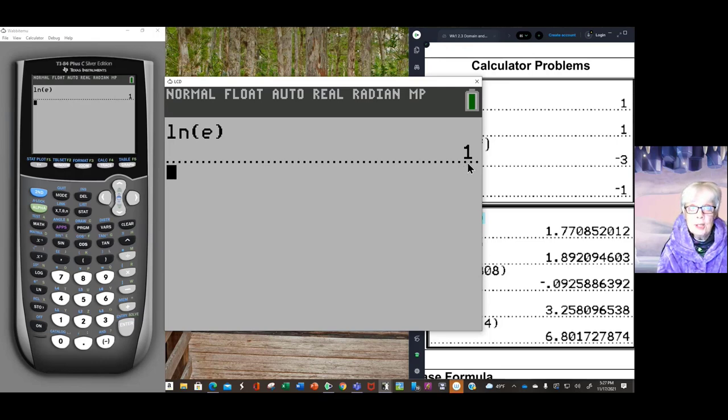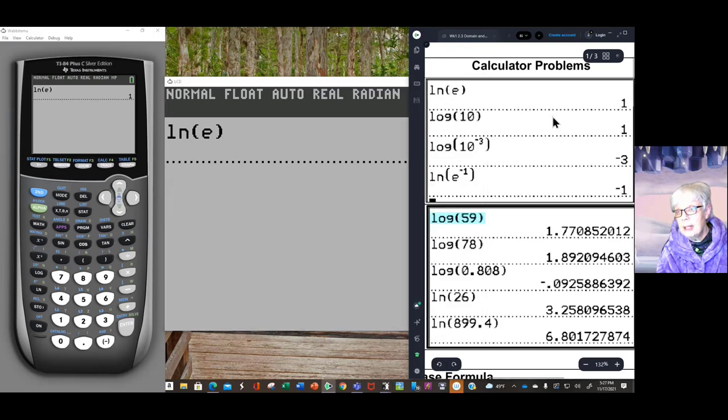And here is the answer, 1. Tomorrow you'll find out why the ln of E equals 1. But for now, just consider it your calculator answer. And you see over here that, indeed, that is the answer we're looking for.